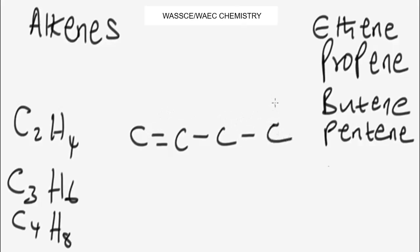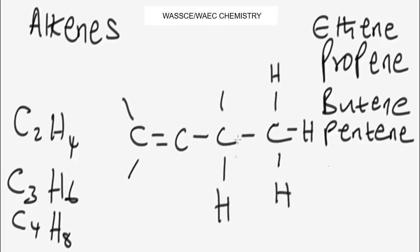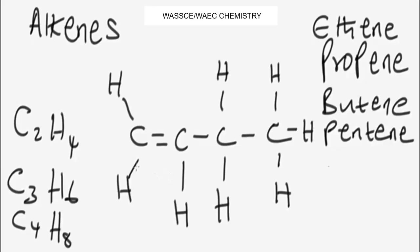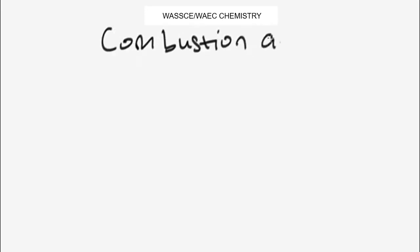Another way you can draw the structure of butene is to put the double bond at the end instead of putting it in the middle. So we're going to have this alternative structure of butene. Now let's wipe this and look at the combustion of alkenes.